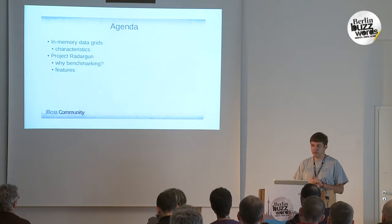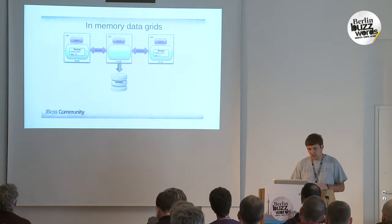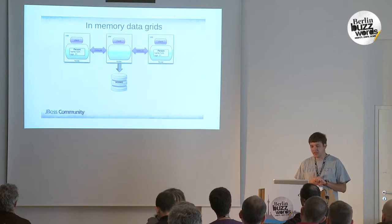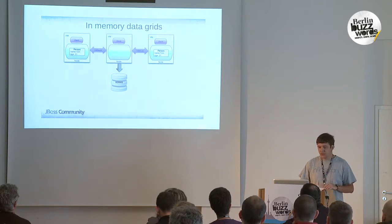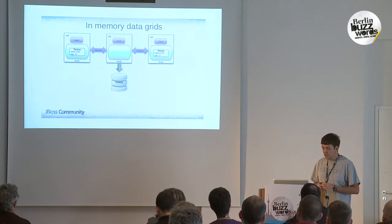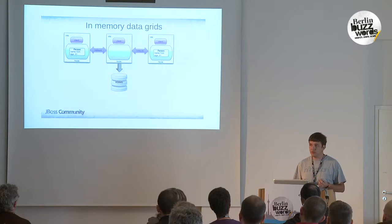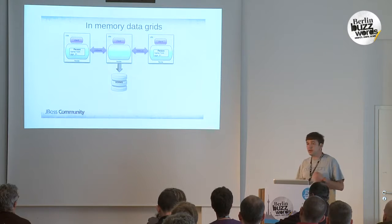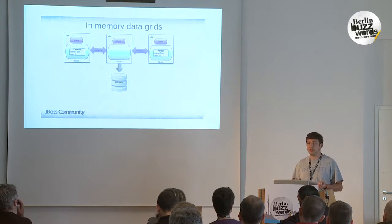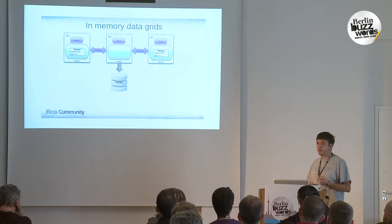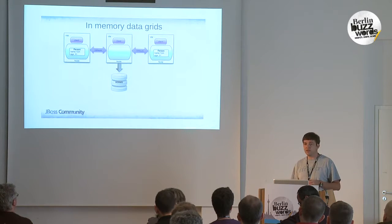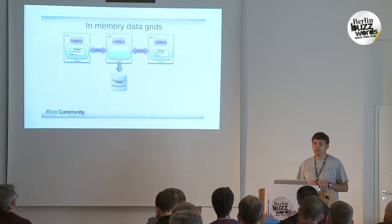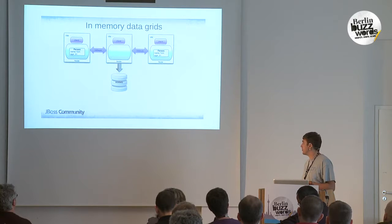So, what is an in-memory data grid? It is pretty much a distributed data management system that uses memory as storage. The storage itself is distributed over multiple processes, called nodes, with the total storage capacity being the sum of the individual nodes' capacity. All nodes communicate over the network. The data you place in an in-memory data grid is generally duplicated — multiple copies are held — because memory is volatile and you want to still have the data even if some nodes crash. The data can potentially be backed up or overflow to persistent storages with higher durability, such as relational databases or files.